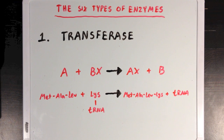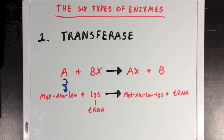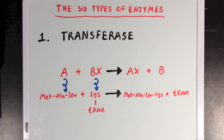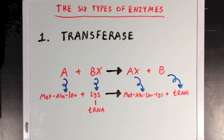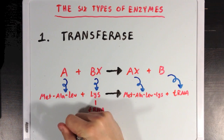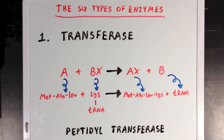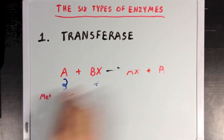In this reaction, A refers to our amino acid chain, B refers to our tRNA, and X refers to the lysine residue which is being transferred from B to A. This reaction is catalyzed by an enzyme called peptidyl transferase, which is an appropriate name since it is a transferase involved in making peptides.